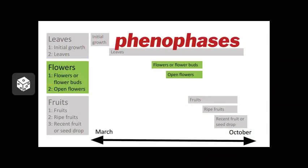As shown on the timeline here, the first of this plant's flower phenophases is referred to as flowers or flower buds, and the second is known as open flowers. If you are watching the wild parsnip series in sequential order, you may notice that, unlike the leaf phenophases, the two flower phenophases have a large amount of overlap time-wise, which is important to remember while recording observations.